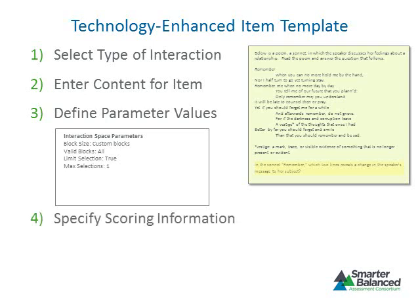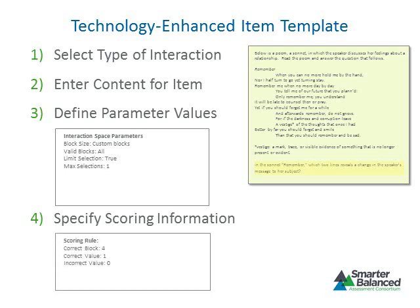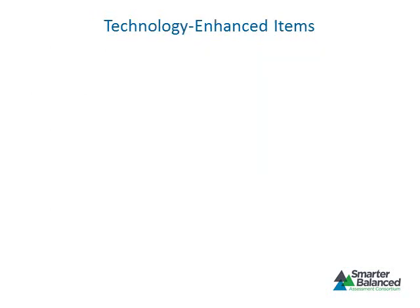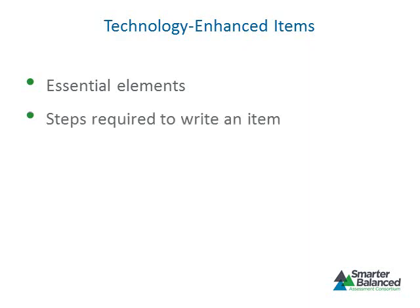The final component allows an item writer to enter information about how to score a student's response, including the number of points awarded and the responses for each point value. For example, the item writer indicated that text block number four is the correct response and the value for a correct response is one point. A later module will introduce the item writing system used to create and record information for each of these four components. This portion of the module explored essential elements of technology-enhanced items including interaction spaces, parameter values, and scoring rules, as well as the steps required to write a technology-enhanced item and the types currently available for development.